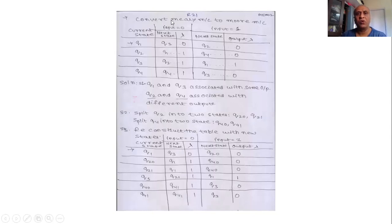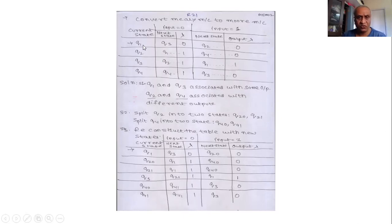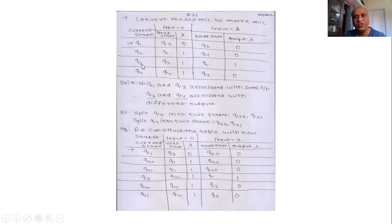The problem says we have to convert the Mealy machine to a Moore machine. This transition table reflects a Mealy machine because the output is dependent on the current state and the transition. For example, if the input is 0 and the current state is Q1, then the output is 0 and the next state is Q3. If Q2 and input is 0, the output is 1 and the next state is Q1. Similarly, for Q3 with input 1, the next state is Q1 and the output is 1.